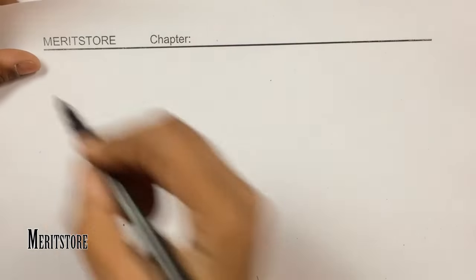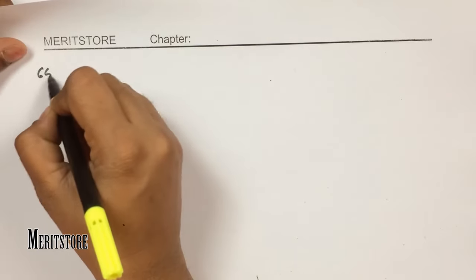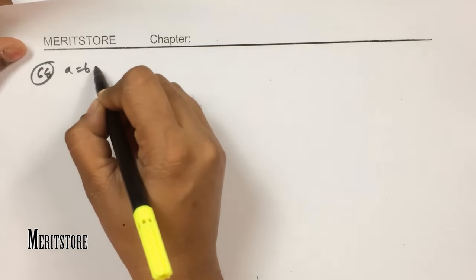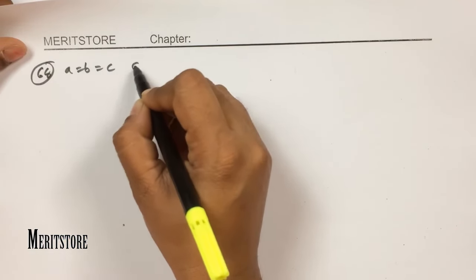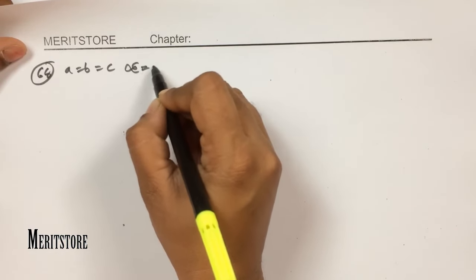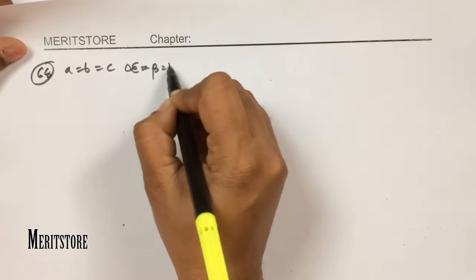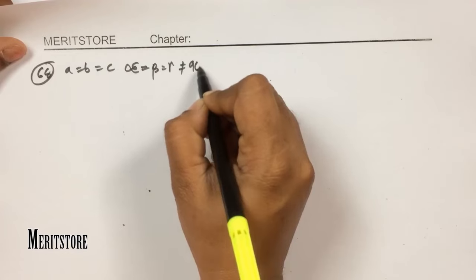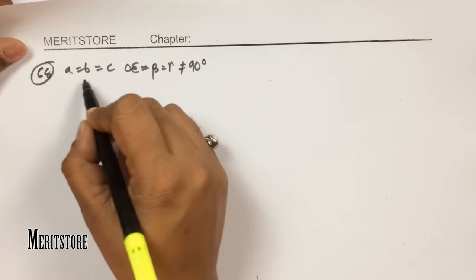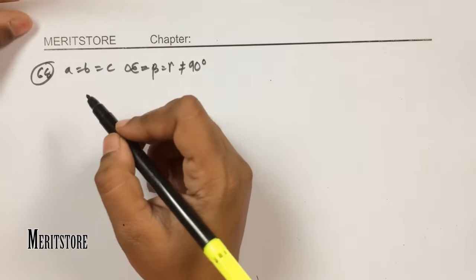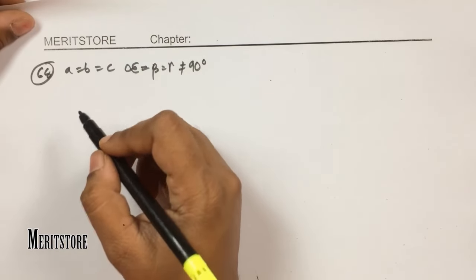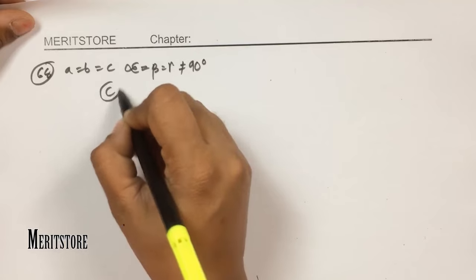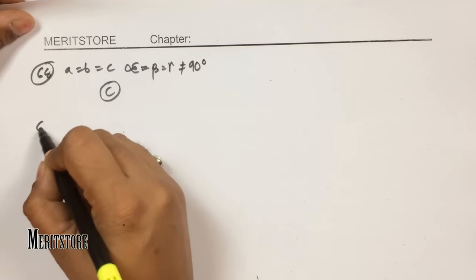Question number 68: for a crystal system where a = b = c and α = β = γ but not equal to 90°, this is the description of the rhombohedral crystal structure. Hence option C.